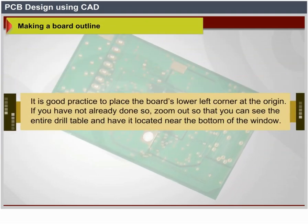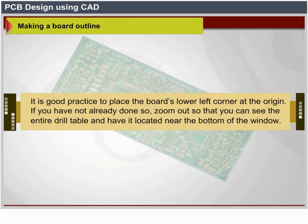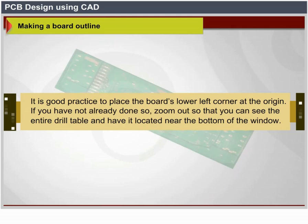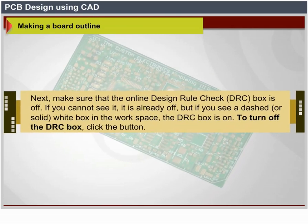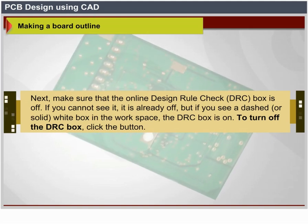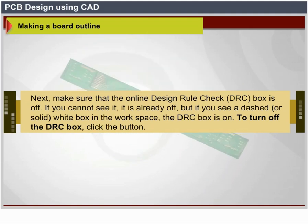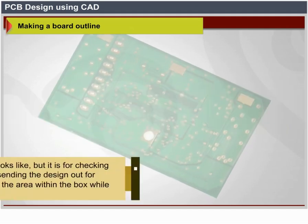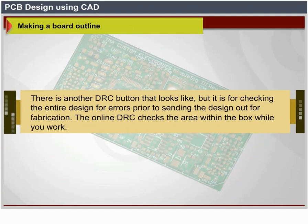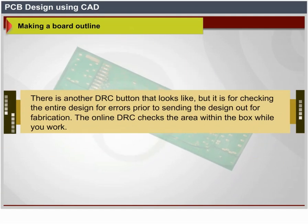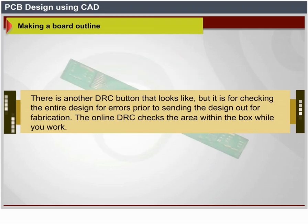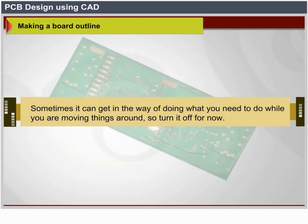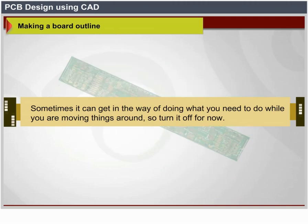Making a board outline: it is good practice to place the board's lower left corner at the origin. Zoom out so you can see the entire drill table located near the bottom of the window. Make sure the online Design Rule Check (DRC) box is off — if you see a dashed or solid white box in the workspace, the DRC box is on. To turn off the DRC box, click the button. Note: there is another DRC button for checking the entire design for errors prior to fabrication; the online DRC checks only the area within the box while you work. Turn it off for now as it can get in the way while moving things around.